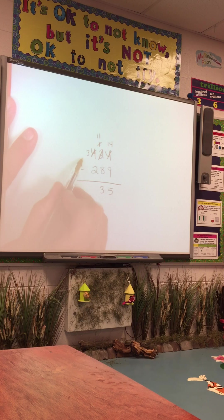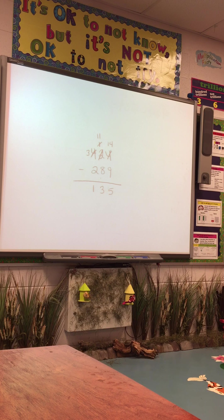have to trade 1 hundred for 10 tens and add that to the 1 ten I have. So 11 tens minus 8 tens is 3, and 3 hundreds minus 2 hundreds is 1 hundred. So we still get the same difference, 135.